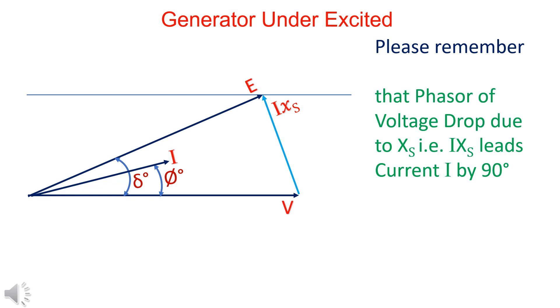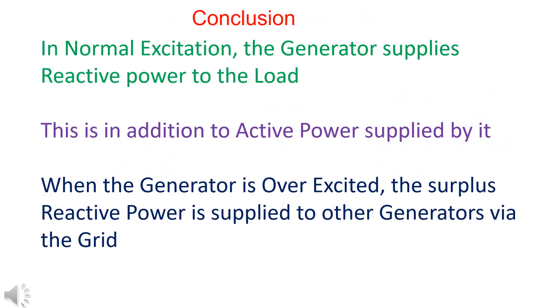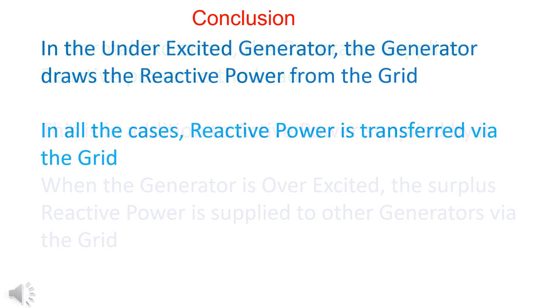Always remember that the phasor of IXs leads the current by 90 degrees. There is a misconception that only over-excited generators supply reactive power to the grid. Normally-excited generators also supply reactive power to the grid. The reactive power provided by the normally-excited generator caters to the requirement of the load. The excess reactive power of the over-excited generator is supplied to the under-excited generator connected to the grid.